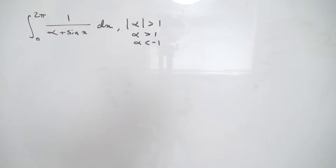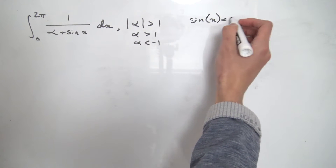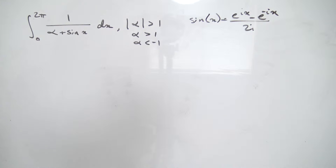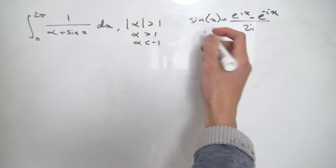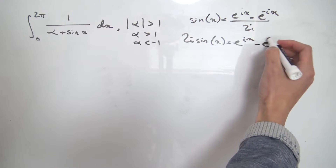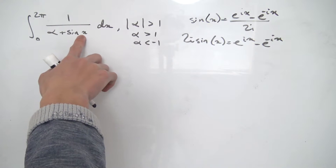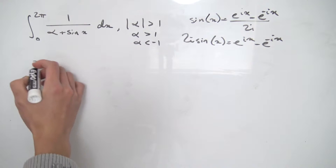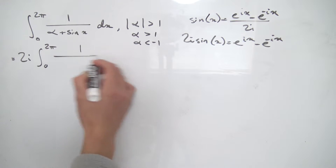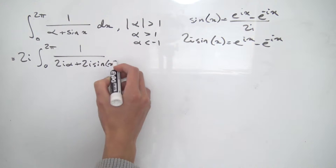We rewrite sine of x using its complex exponential definition: sine of x equals (e^(ix) minus e^(-ix)) divided by 2i. Multiplying both sides by 2i gives 2i·sin(x) = e^(ix) − e^(−ix). We then multiply the top and bottom of the integrand by 2i, giving 2i out front times the integral from 0 to 2π of 1 over (2i·alpha + 2i·sin(x)) dx.